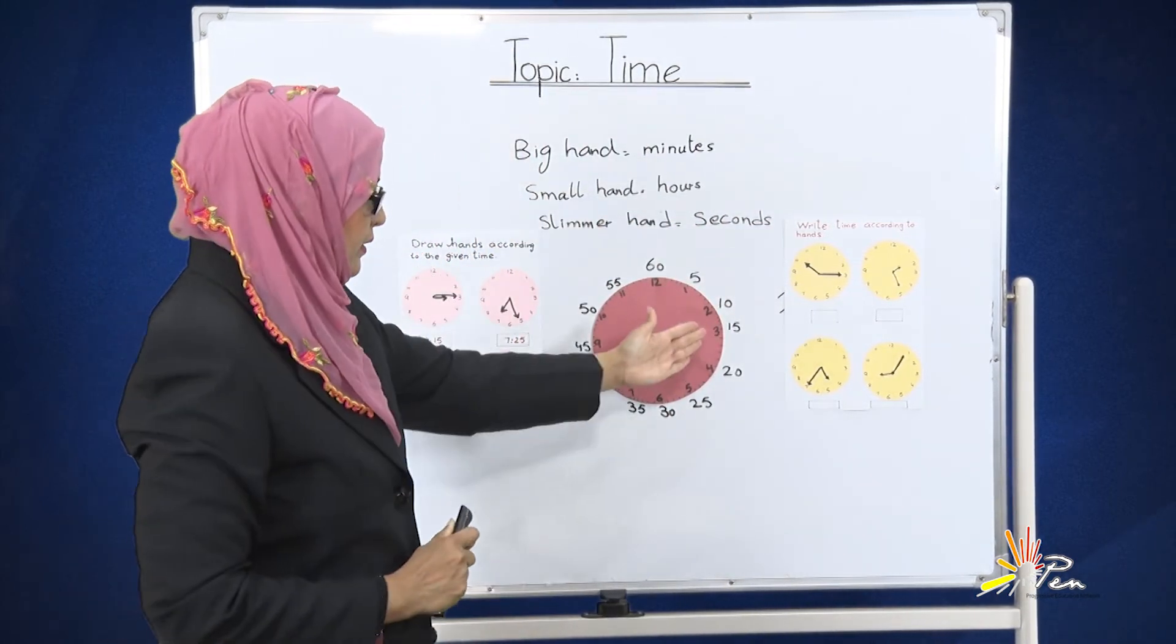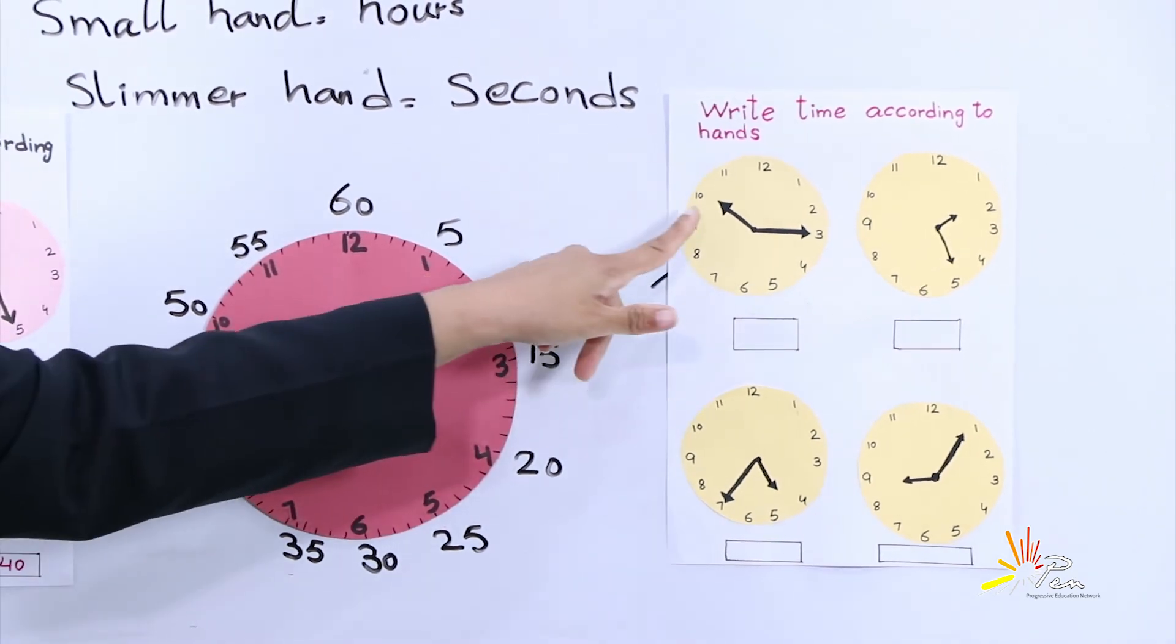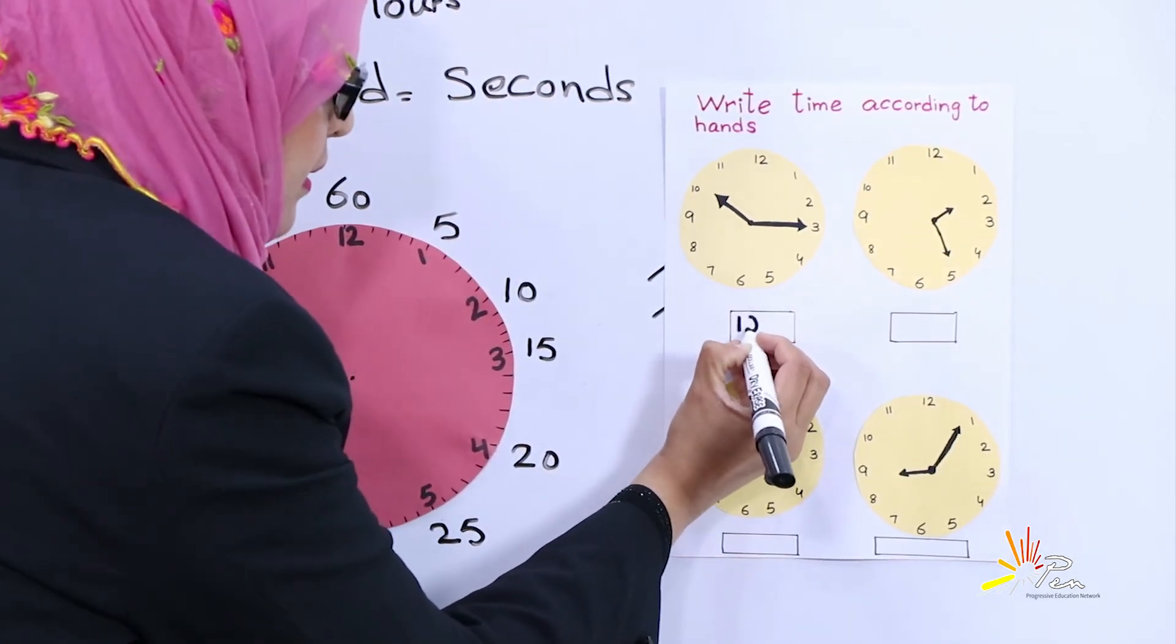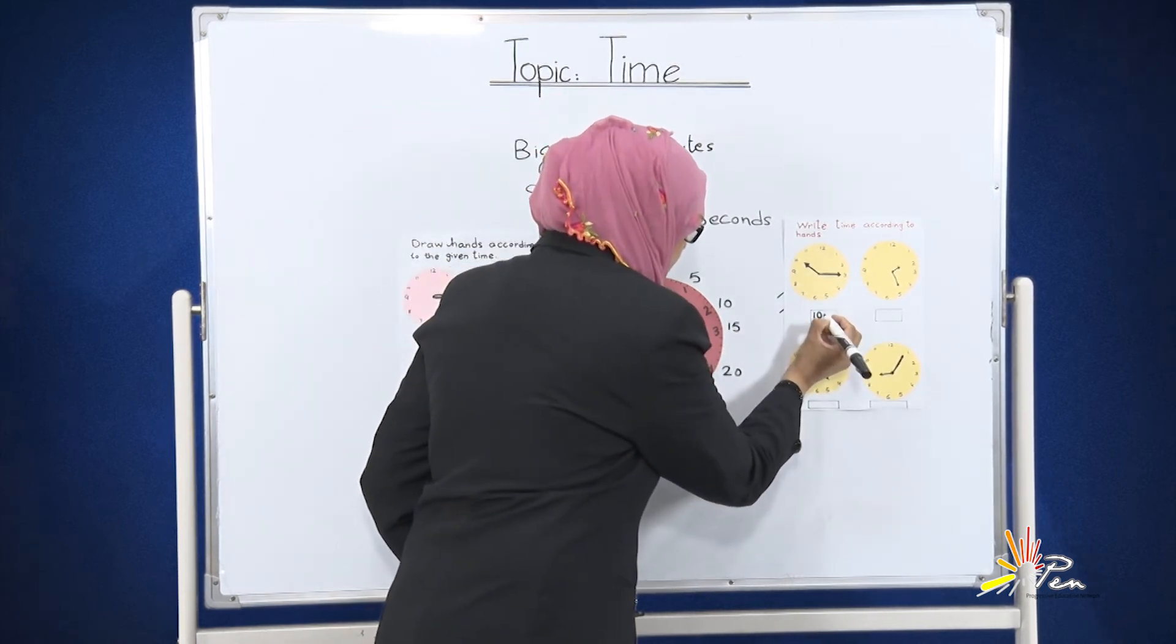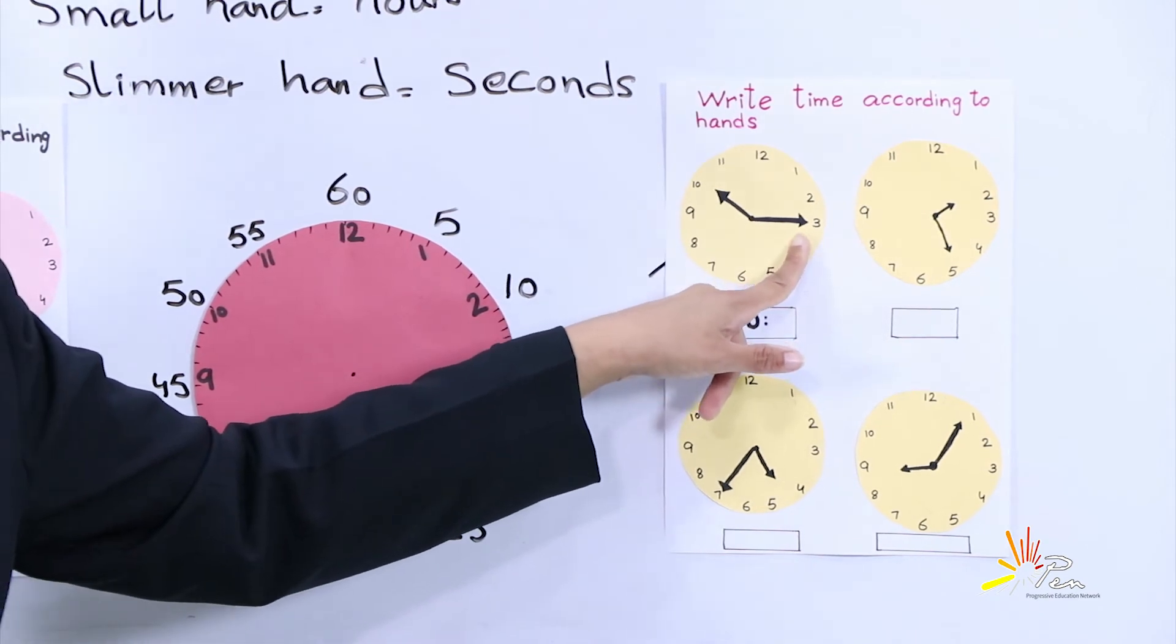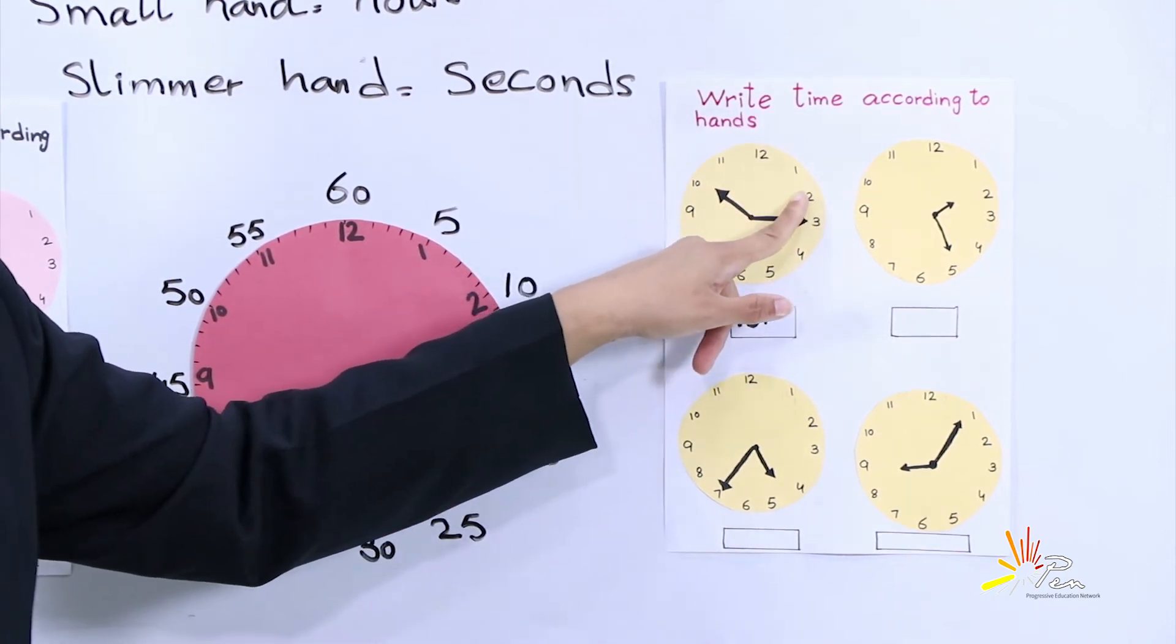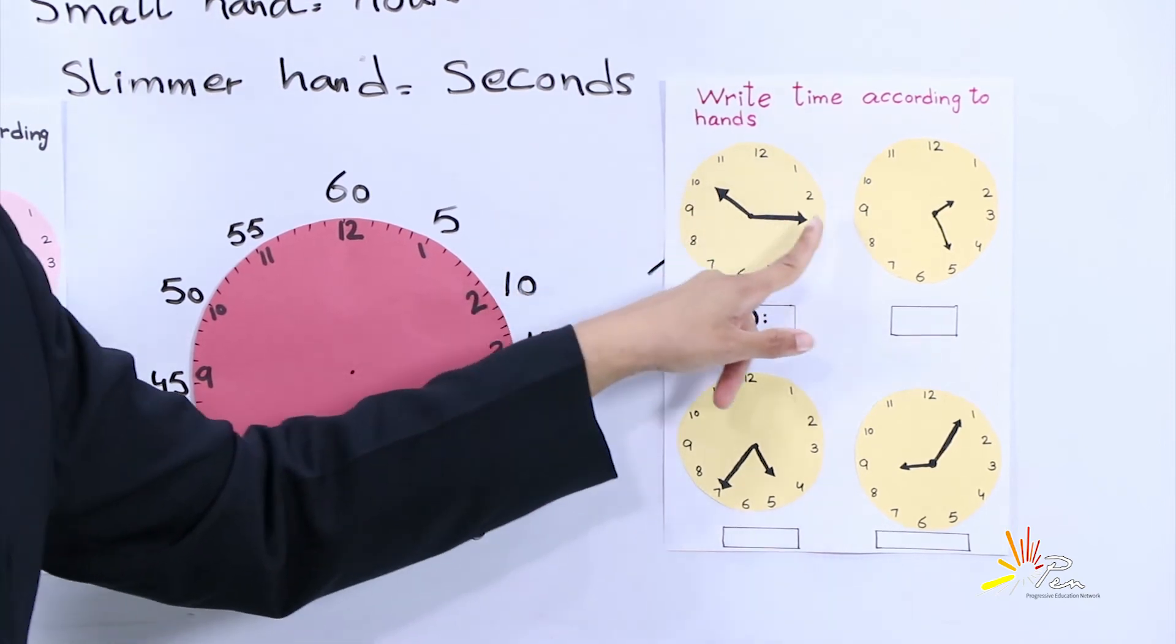You can see on this clock the smaller hand is at the number 10. We will write 10 like this. After the colon we will write about the minutes. The bigger hand is at the number 3: 5, 10, 15. It means 10:15.